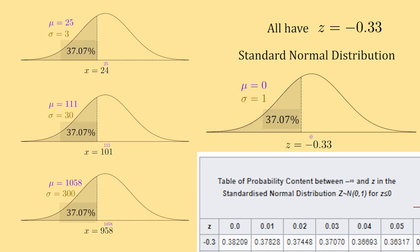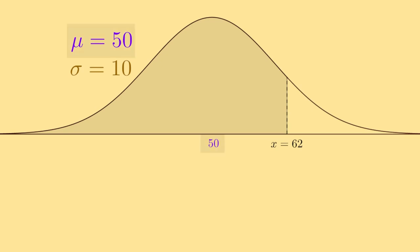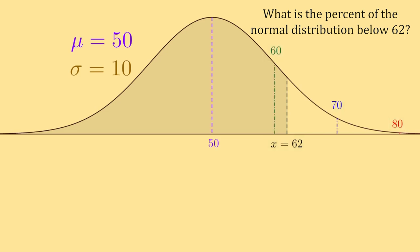For example, say I have the normal distribution with a mean of 50 and a standard deviation of 10, and I'm asked to find the percentage of the normal distribution below the number 62. Since 62 itself is not 1, 2, or 3 standard deviations away from the mean, in fact it is between 1 and 2 standard deviations above the mean.